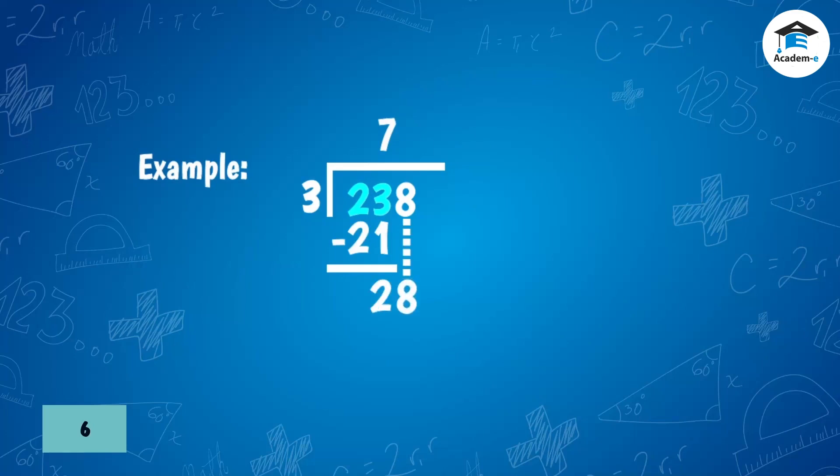Bring down 8. Divide 28 by 3, then subtract the product of 3 and the partial quotient 9 from 28. The quotient is 79 and the remainder is 1.